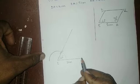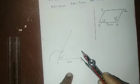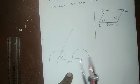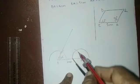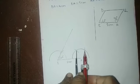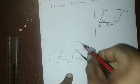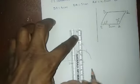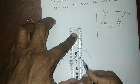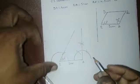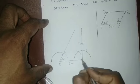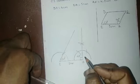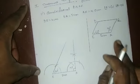At A, construct a 90-degree angle. Draw an arc with a suitable measurement. From this point, cut the arc. Then join these points. The angle formed is 90 degrees — you have the 90-degree formation.